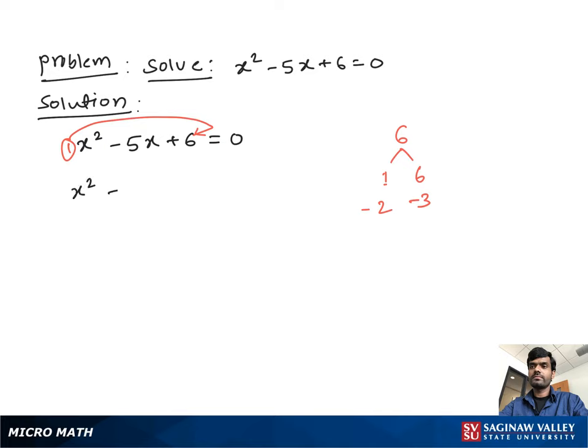Then we write x square minus 2x minus 3x plus 6 equal to 0. Now from this pair we take x as a common, we have x times x minus 2. Now from this pair we take negative 3 as a common, we get x minus 2, all equal to 0.